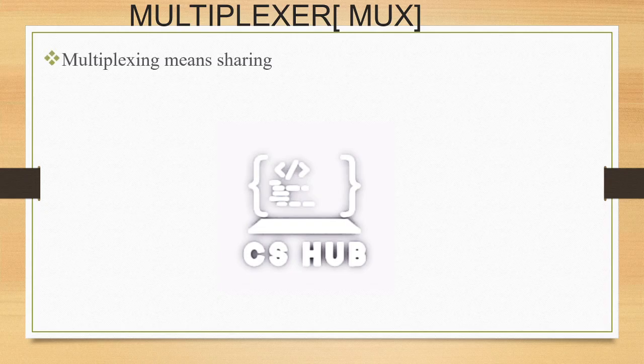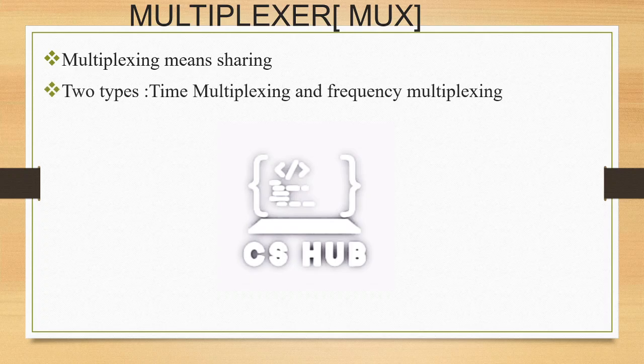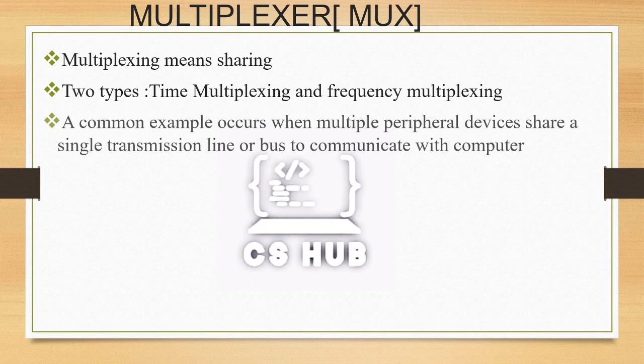Multiplexing means sharing. Just like multiplex theaters share a single building with two screens, in computing multiple peripheral devices — keyboard, mouse, printer — share a single transmission line or bus to communicate with the computer.